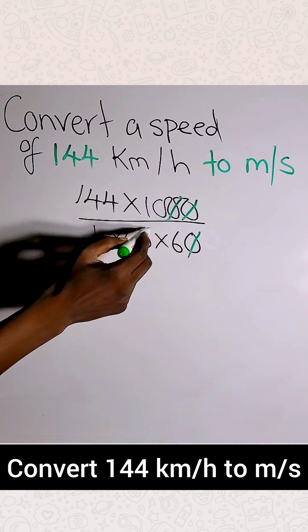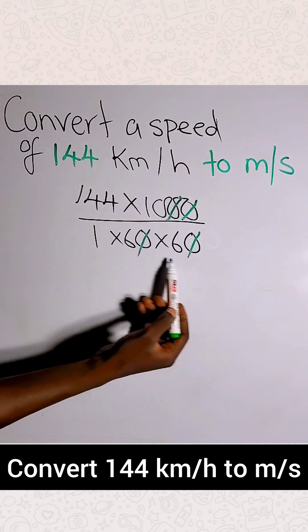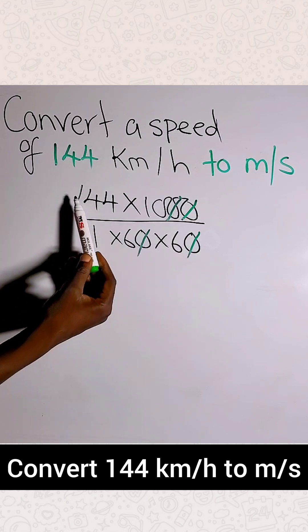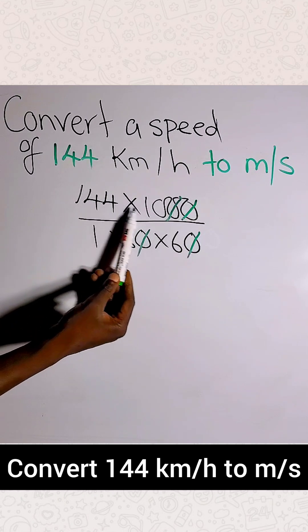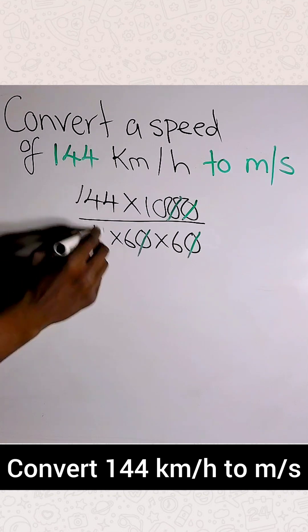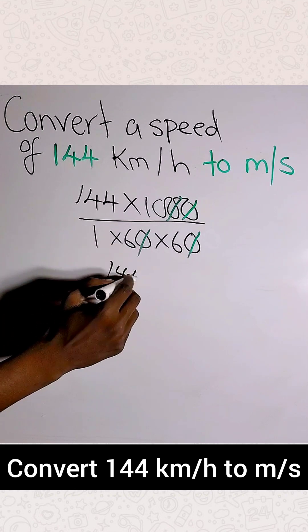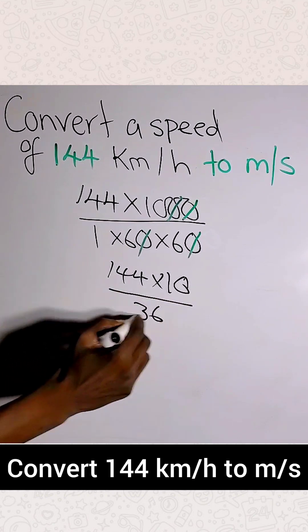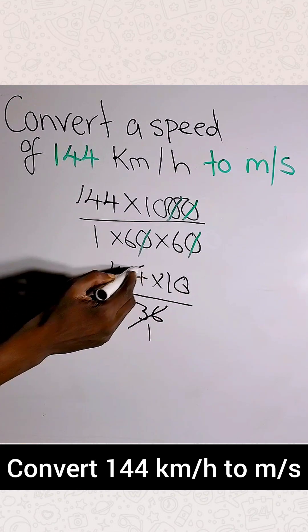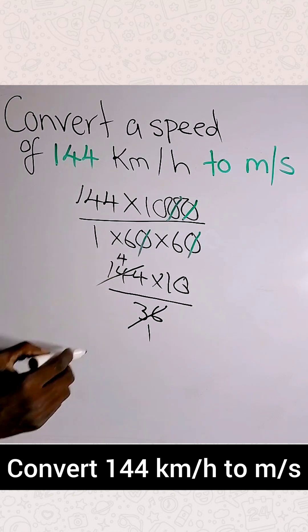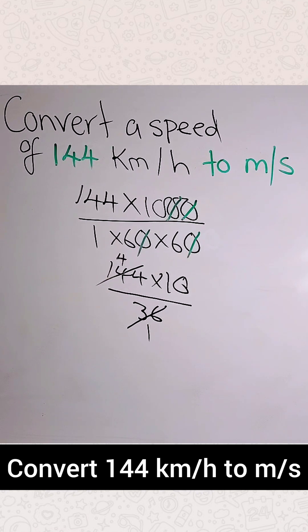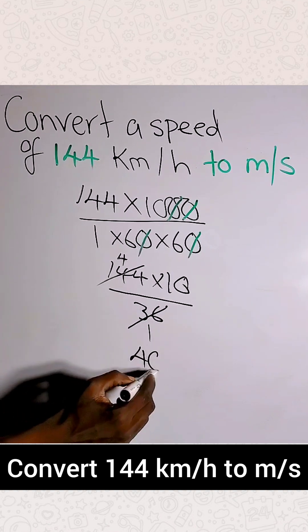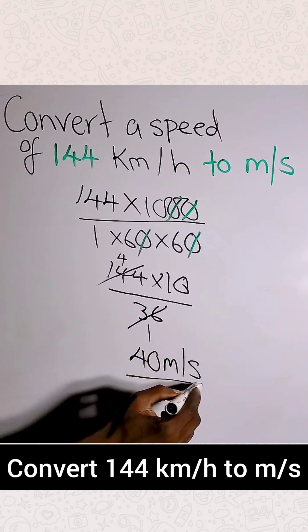You can cancel the zeros — this zero and this zero cancel, this zero and this zero cancel. On the denominator you're left with 36, and on top just 144 times 10. So 36 goes into 144 four times, and four times 10 is 40. The answer is 40 meters per second.